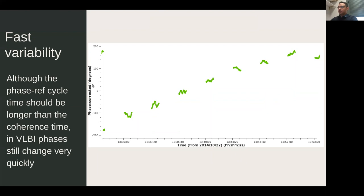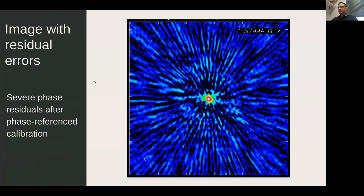Within each scan there will always be residual phase variations on shorter timescales than the calibrator scan interval — you cannot account for these by interpolating calibrator solutions. These residuals can have a very important effect on the data depending on atmosphere quality. The result can be an image full of stripes — not Gaussian noise, but residuals that need to be corrected.